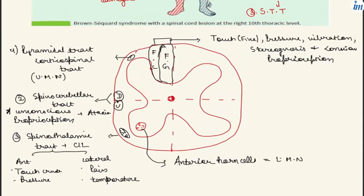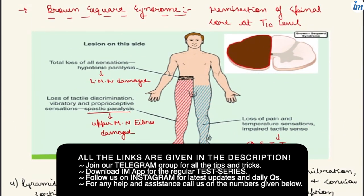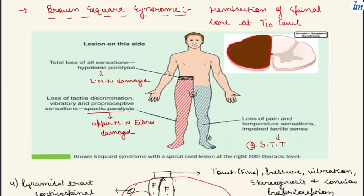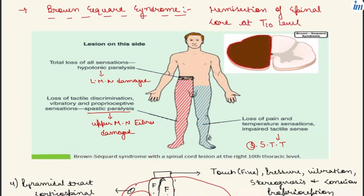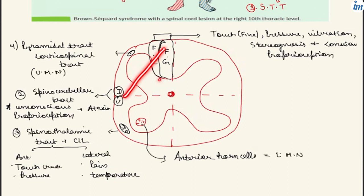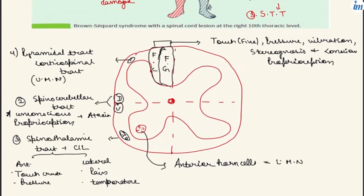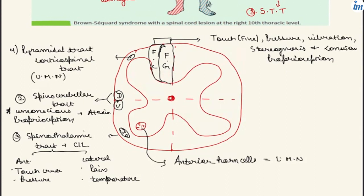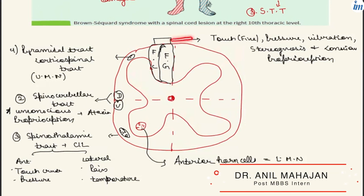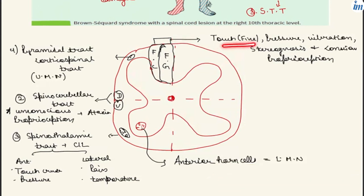Next, regarding Brown-Séquard syndrome: this is a clinical condition where one section of the spinal cord has been transected or damaged. For example, in a severe road traffic accident, the T10 section of the spinal cord is totally damaged on one side. We will revise the tracts of the spinal cord. The first tract is the dorsal column system — fasciculus gracilis and fasciculus cuneatus — which make up the dorsal column medial lemniscus system. It is an ascending tract carrying fine touch, pressure, vibration, stereognosis, and conscious proprioception.